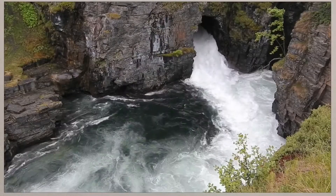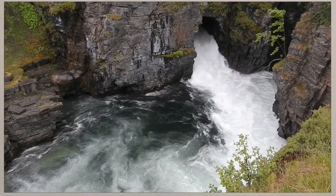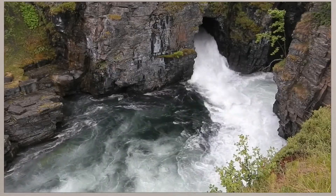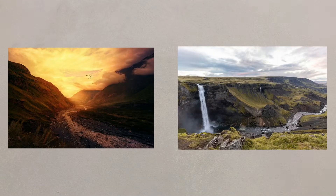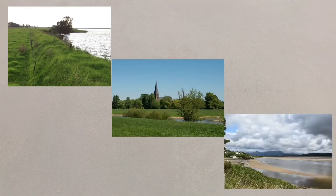Due to these processes, there are some distinctive landforms that you will need to be aware of. Erosion creates interlocking spurs, waterfalls and gorges, whereas erosion and deposition will create meanders and oxbow lakes. Where deposition occurs, you will find levees, floodplains and estuaries.